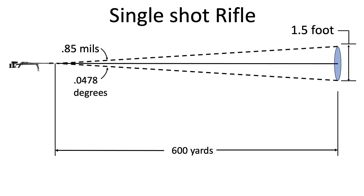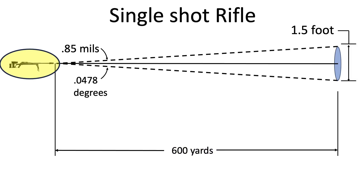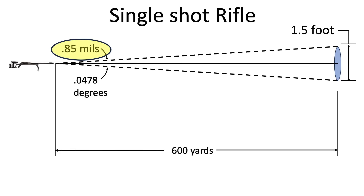We can represent this graphically by a 1.5-foot diameter .50 caliber bullet strike grouping located a distance of 600 yards from a V-block stabilized single shot rifle. The dispersion equates to 0.85 mils, or 0.0478 degrees.